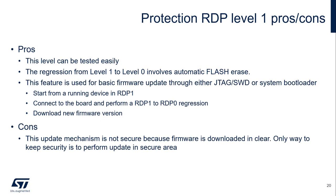There are some pros and cons of RDP level 1. This level is very easy to test because you have the chance to go back to a virgin chipset. The regression from level 1 to level 0 involves an automatic flash erase. That means even though you can go back to level 0, the confidentiality of the firmware is not compromised, because everything is erased in this regression procedure. This feature can be used for basic firmware update through either JTAG, SWD, or the system bootloader.